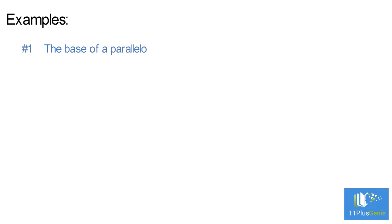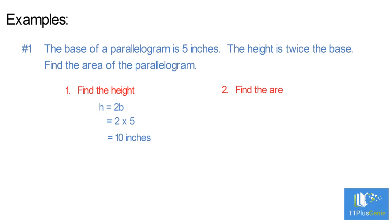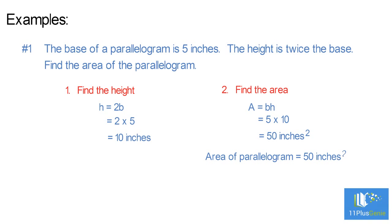Example 1: The base of a parallelogram is 5 inches. The height is twice the base. Find the area of the parallelogram. Find the height: H equals 2B equals 2 times 5 equals 10 inches. Find the area: A equals B times H equals 5 times 10. The parallelogram has an area of 50 square inches.